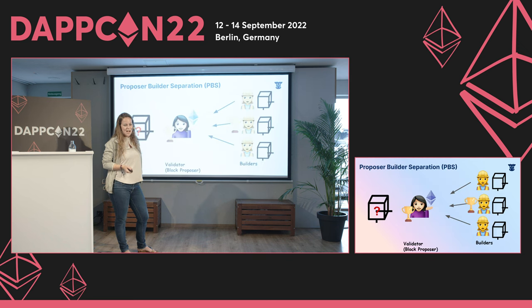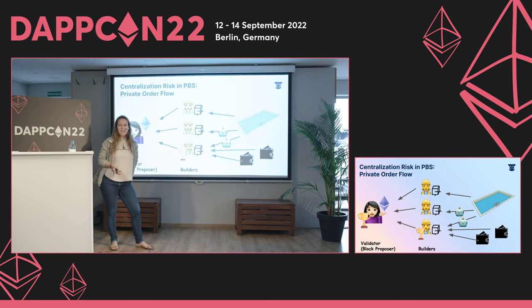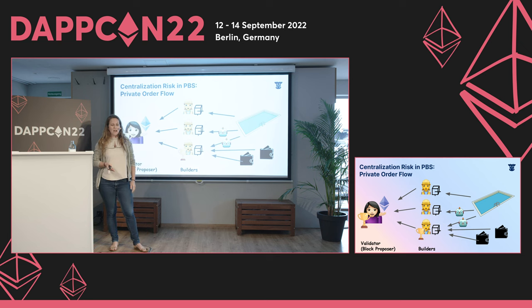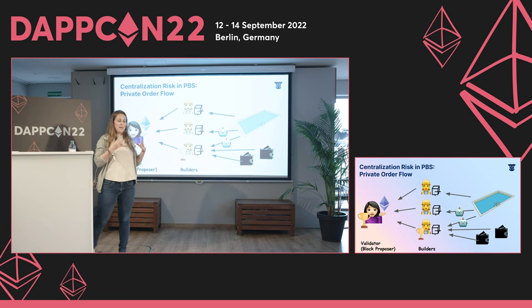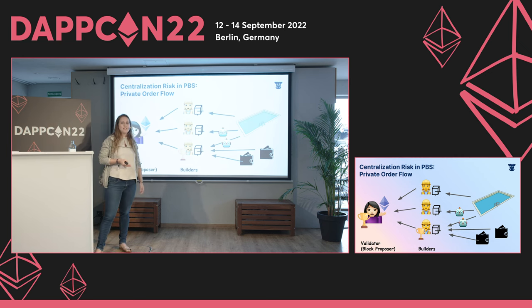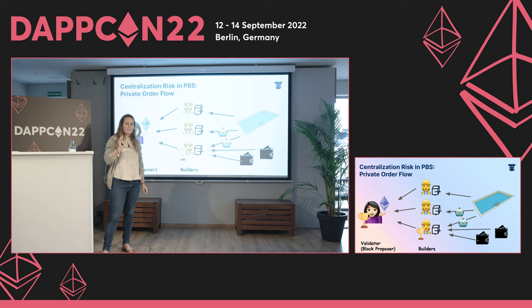Is proposer-builder separation really solving the problem of centralization? The answer is no, or at least not really. Before you had centralization risk with validators, but you've now shifted this risk over to the builders. Now it's essentially the builders who have power over the transaction payload, and a risk arises from private order flows.